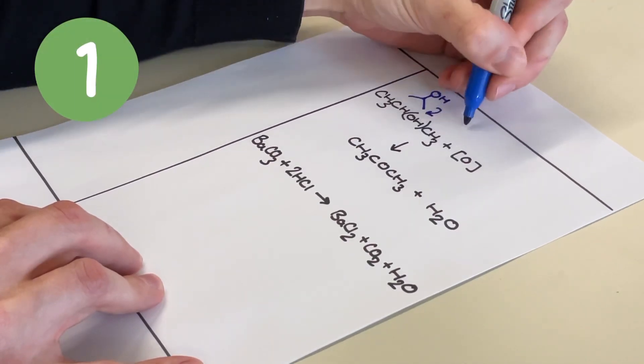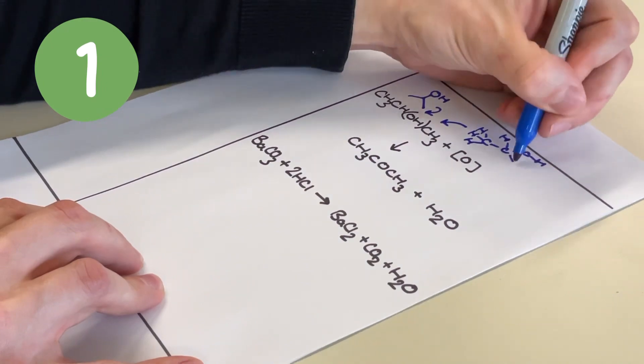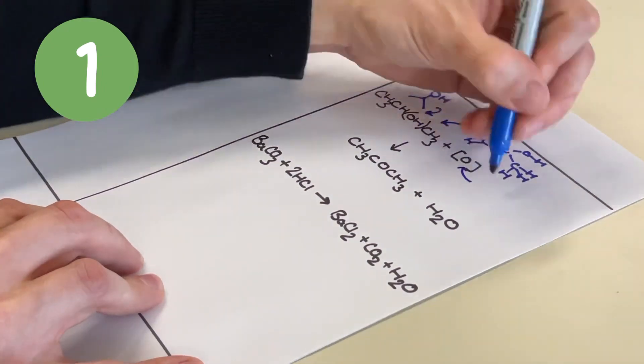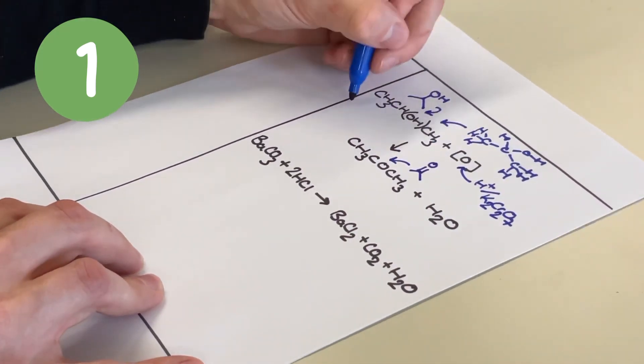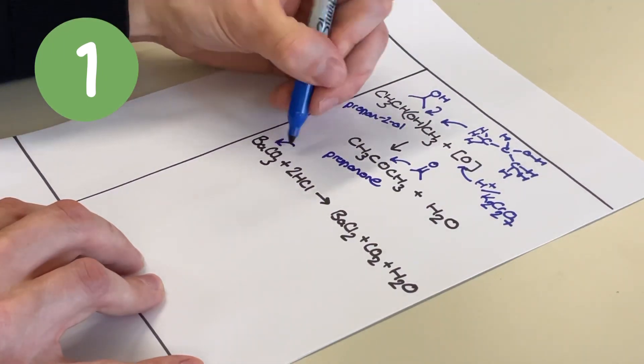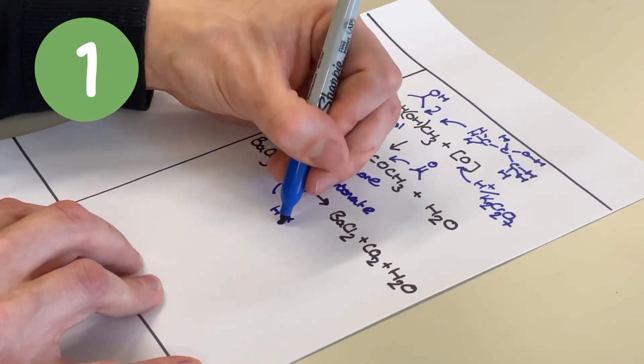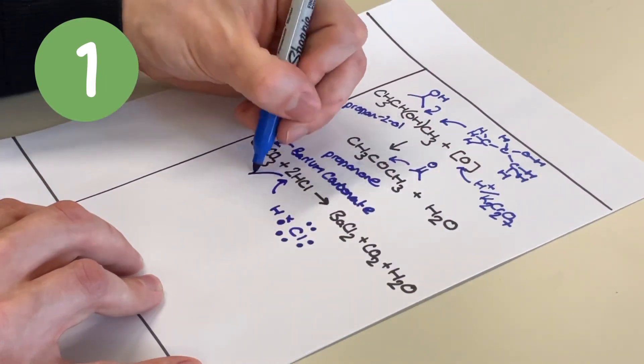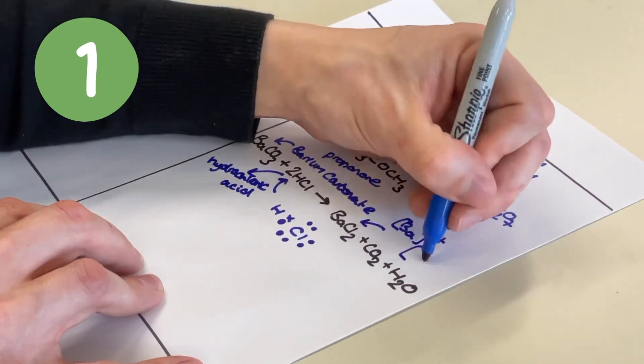So, hack one. When making Cornell notes, leave lots of gaps around what you are writing and then either soon after or later on, maybe the next day, go back through and enhance each mention of a chemical compound with different structures, different types of formula, names, dot and cross diagrams, the works. It will really help you dive deeper into each question and equation that you cover and boost your general subject knowledge.